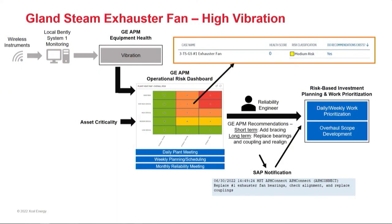Another example: our gland steam exhaust fan and motor on one of our units. We added wireless instrumentation to the fan and motor assembly. That data went into our local System 1 server, we connected it to Pi and brought it into APM, set limits around it, and the vibration was excessive. Combined with criticality, it populated as a medium risk on the dashboard. The engineer worked with our vibration SME to diagnose it further, added stiffening to the structure to reduce vibration levels, and created a recommendation for long-term risk mitigation — replacing bearings, replacing the coupling, and realigning the fan and motor. That created an SAP notification and is now being worked through our normal overhaul planning and work management process.